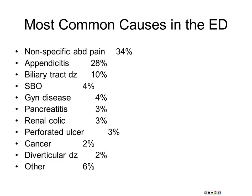Most common cause of small bowel obstruction in America is adhesions from prior surgery — specifically prior abdominal surgery. Pancreatitis is also on the list — you guys all know Rankin's criteria, that's actually useful. Then renal colic, perforated ulcer — this still happens, we still do a bunch of perforated ulcer disease. Cancer is actually much lower down on this differential than you'd think, then diverticular disease, and then a category of other.